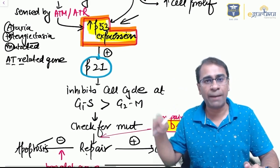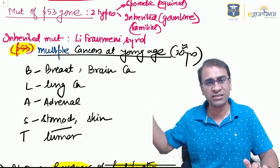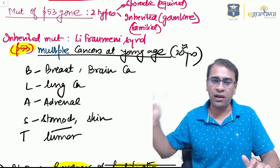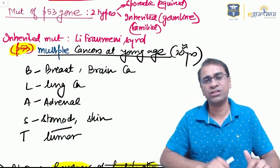On mutation, it leads to this syndrome with the mnemonic BLAST: breast, brain, lung, adrenal, stomach, and skin tumor can be caused by p53 mutations. The inherited form is called Li-Fraumeni syndrome.